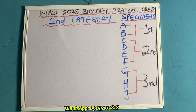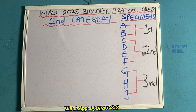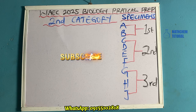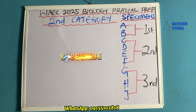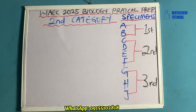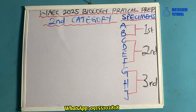This is the WAEC biology practical prep for the second category. If you are seeing this video, kindly request the first video because I have explained the fourth category in my previous video. This second category will be looking into four different specimens: specimen C, D, E, and F. The first question they can ask you is that you should identify each specimen.